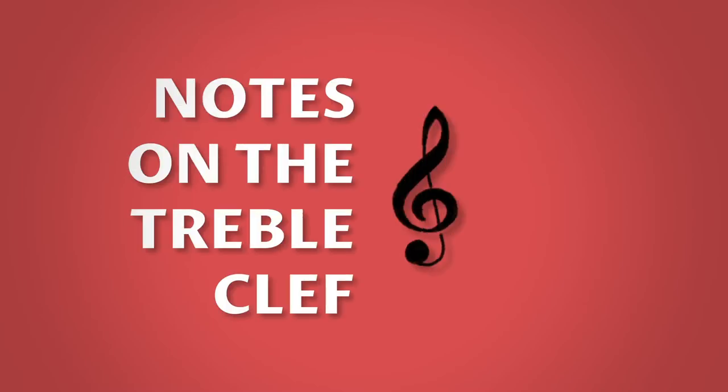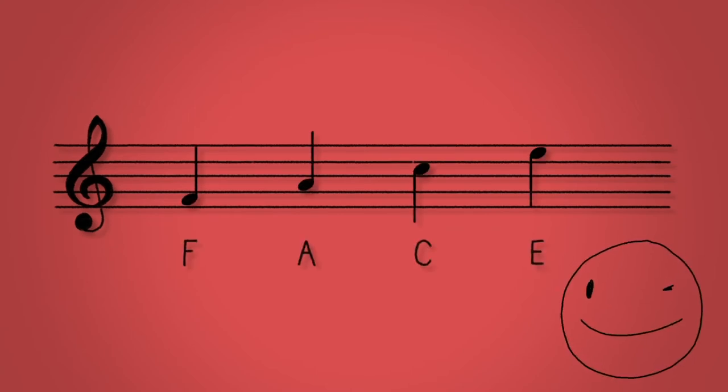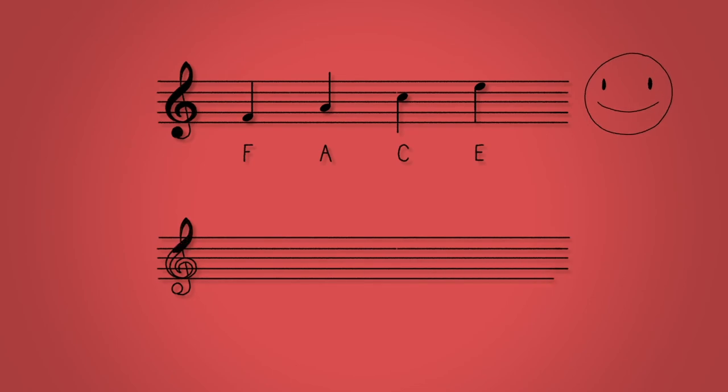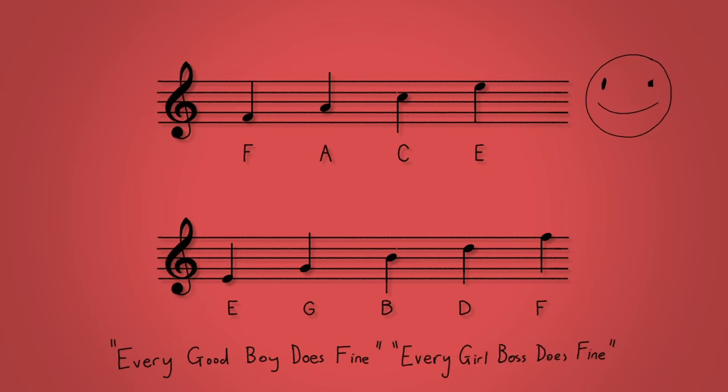The notes on the treble clef. To avoid counting up from middle C every time we can use memory aids to recognize the notes. The four spaces on the treble staff spell out F-A-C-E or FACE. The five lines of the treble staff are E-G-B-D-F. The acronyms for these are usually pretty rubbish and we think it's much more fun to make up your own.